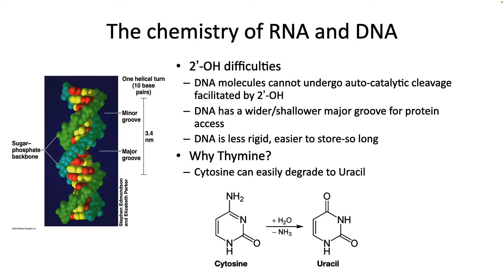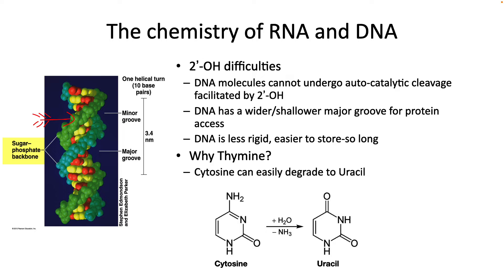Before we dive into transcription, let's first remind ourselves of the structure of nucleic acids. DNA will fold into a double helix. This helix has a sugar phosphate backbone held together by bases that give it specificity and stability. Each turn of the helix has about 10 base pairs with a length of 3.4 nanometers. Each turn also has a major groove and a minor groove, where other molecules — including proteins and sometimes other nucleic acids — can interact with a specific sequence.